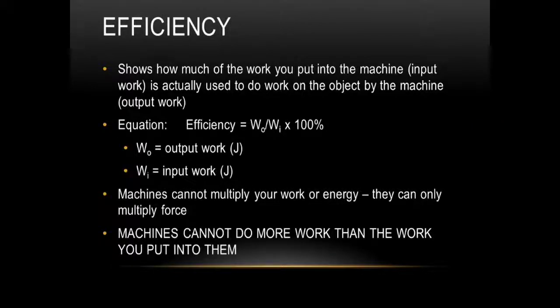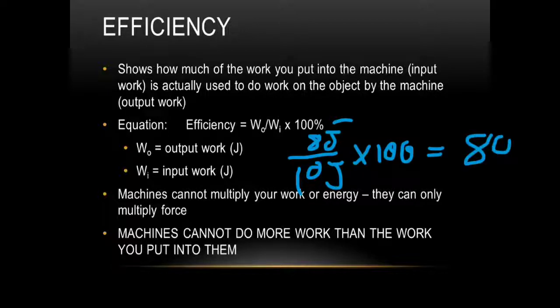And probably the most important thing we need to know about machines is their efficiency. The efficiency shows how much work you put into the machine is actually used to do the work on the object. So, you're going to put work into the object, and how much work is being put out after you put the work in, how much work is being brought out. And that will tell you the efficiency. So if you use this equation right here, work out divided by work in times 100, you will get your efficiency. So let's say for instance, I'm trying to find the efficiency of some machine that I was using, and I applied 10 joules worth of work, and the machine put out 8 joules worth of work. I'd multiply that by 100, and that equals an 80% efficient machine.